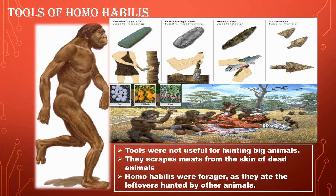They also ate the leftovers of animals that had been hunted by other animals. It may also be possible that they hunted small animals and gathered eggs, wild fruits and roots to eat. Life for these species was based on nature - fruits and fish were part of their food. They were not aware of fire, so they ate raw and rough meat. On your slide you can see Homo habilis scraping meat from a dead animal.